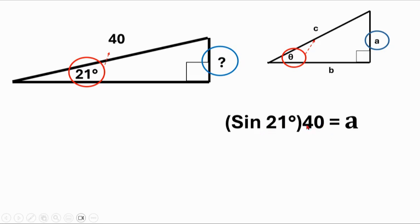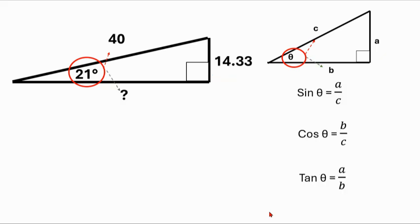I like to put parentheses around the sine just to make sure you don't multiply 21 and 40, which would give you the completely wrong answer. So you put that in a calculator, and if you need help putting that in a calculator, click on the card above. We get 14.33, which is the missing side.